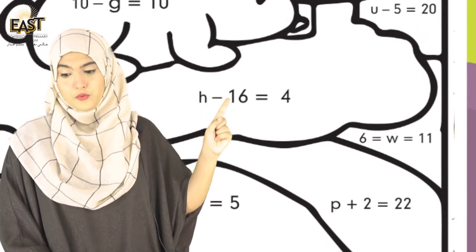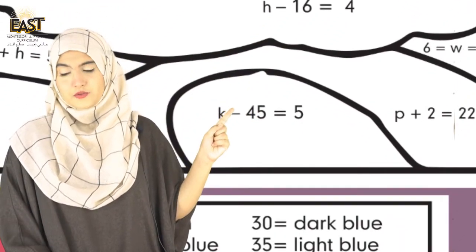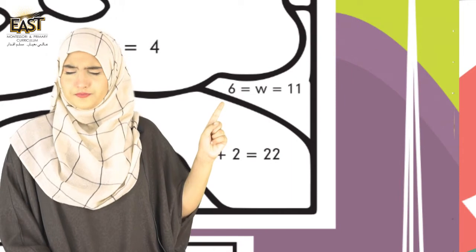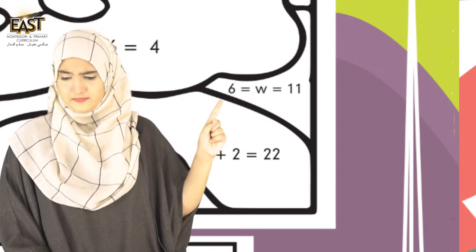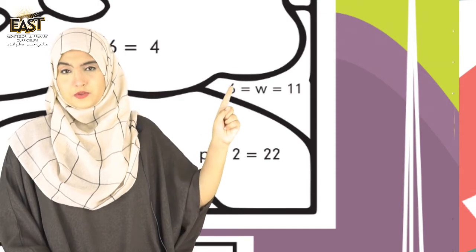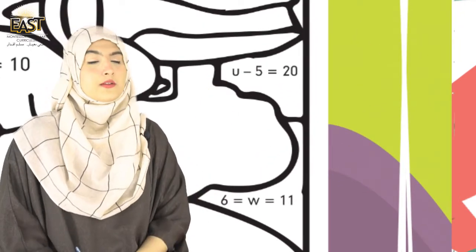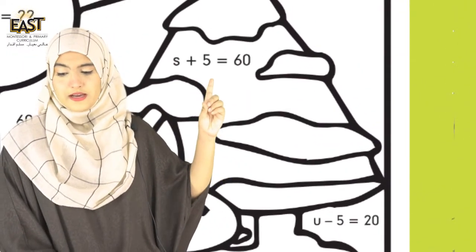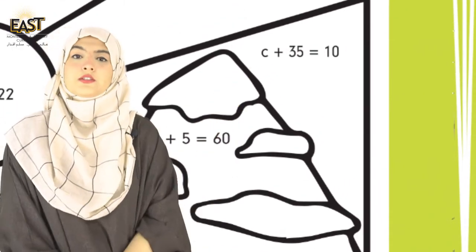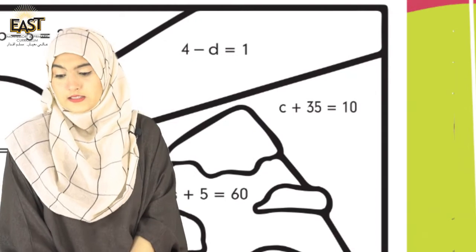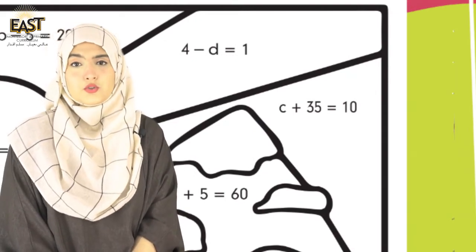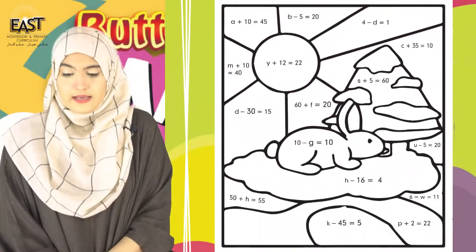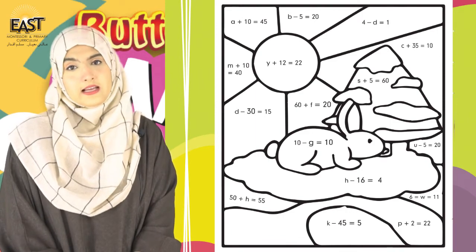h-16=4, k-45=5, b+2=22, 6+w=11, u-5=25, t-4=1. So yeh itni saari equations hai, aur aapne yeh sab kut solve karnei hai. To aayye chalte hai aur dheekh te hai ke aapne kiya karna hooga yahaan.